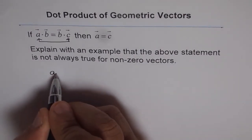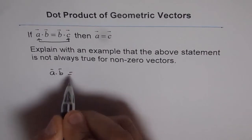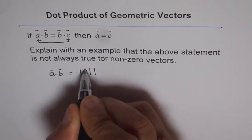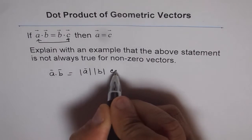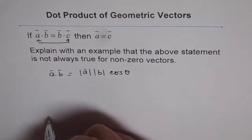As such, you know what A dot B is, right? A dot B is magnitude of A times magnitude of B times cosine of the angle between them.